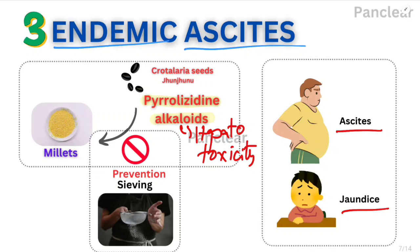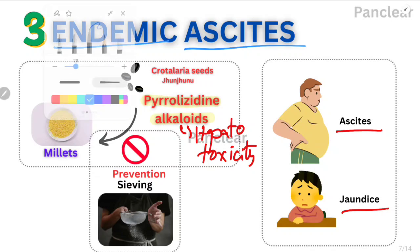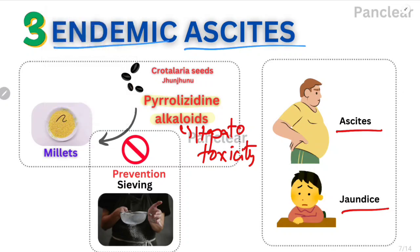Endemic ascites causes ascites and jaundice due to pyrrolizidine alkaloids. How do we prevent this? By sieving — we use millets through a sieve and the black Crotalaria seeds get stuck in the filter, so it is easier to remove them from the millets. That is how we can prevent endemic ascites.